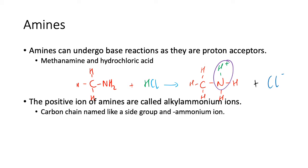It's a carbon chain named like a side group and then an ammonium ion. So let's draw propyl ammonium ion: propyl one two three, it's an ammonium ion so you've got the NH3 positive. And then you've got all the hydrogens that go on with that one there.